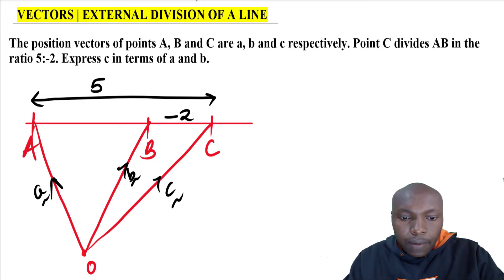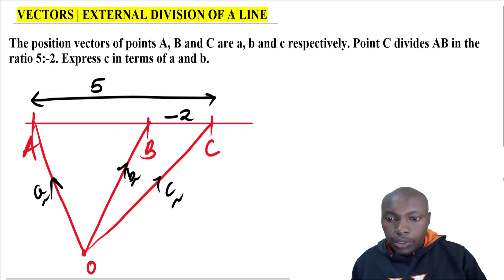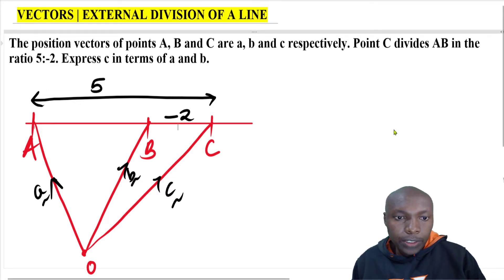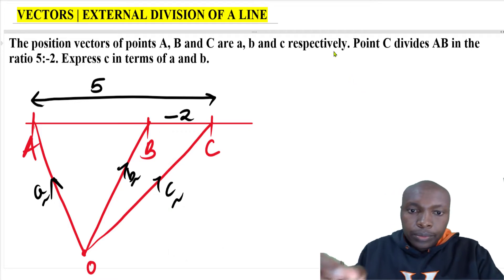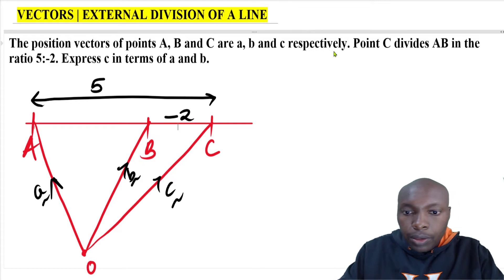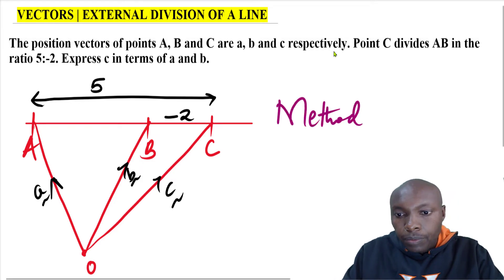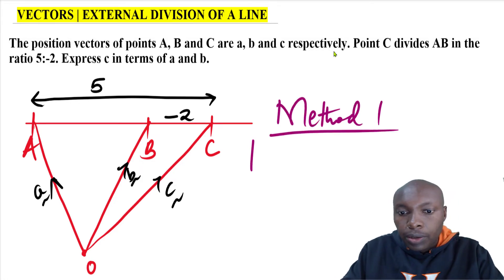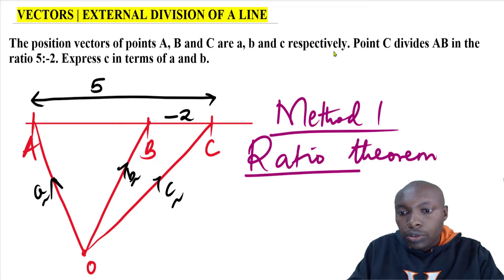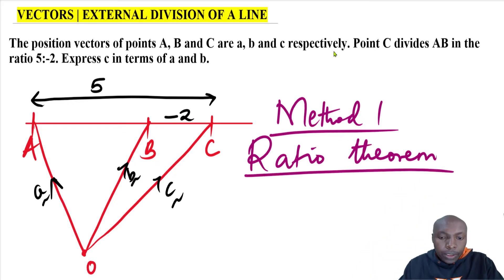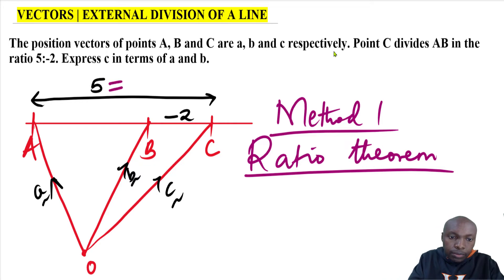There are two methods we can use to express c in terms of a and b. I'm going to work out both methods. Method one is whereby we use the ratio theorem.